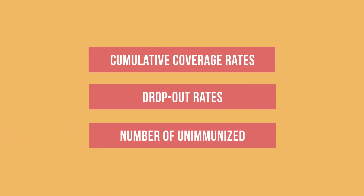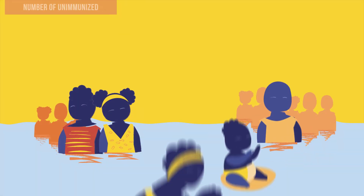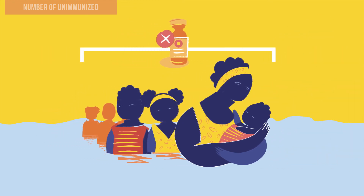To find the number of unimmunized individuals, you will take the total target population and subtract the number of doses administered for a specific vaccine dose, such as pentavalent 3 or the second dose of tetanus toxoid-containing vaccine. The result is the number of infants or pregnant women who have not been immunized for that particular vaccine dose.